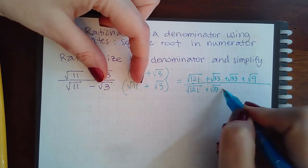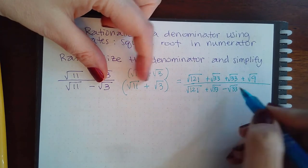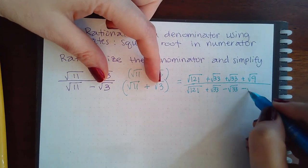Multiply these two, negative √33. And multiply these two, negative √9.